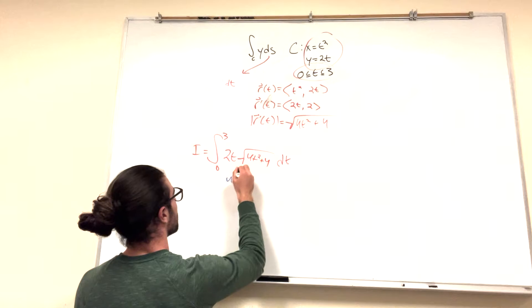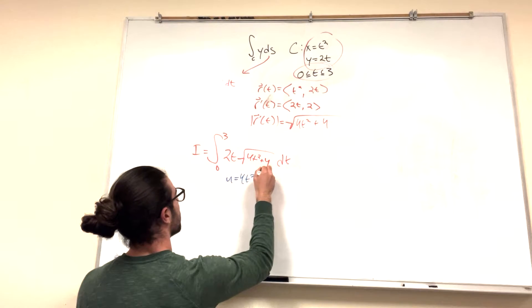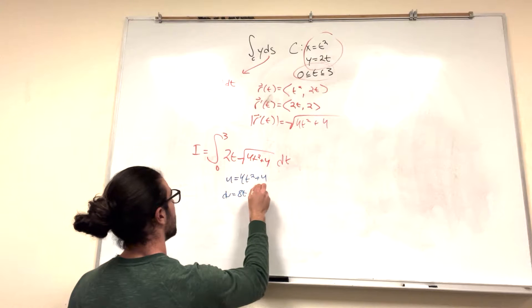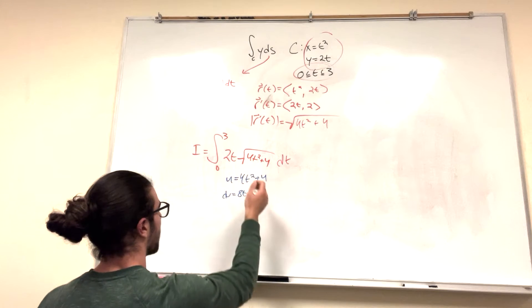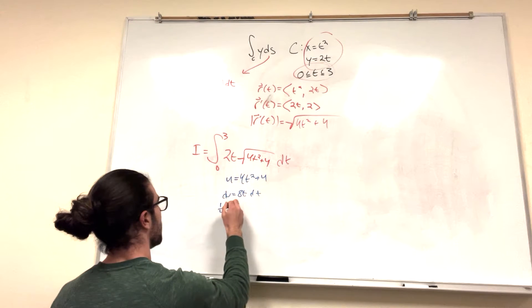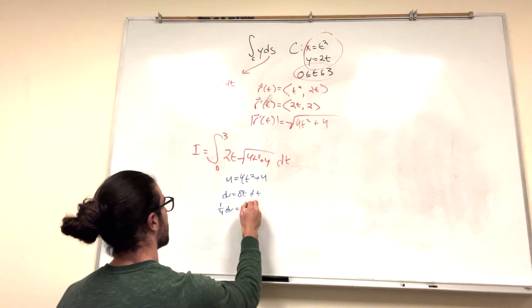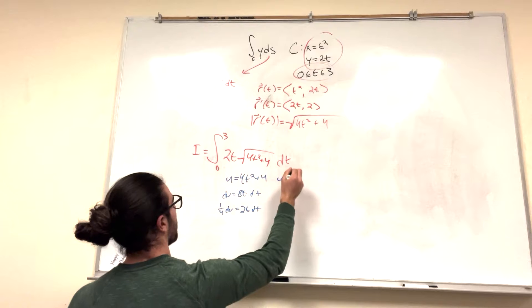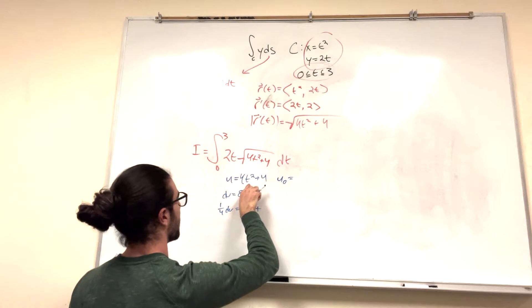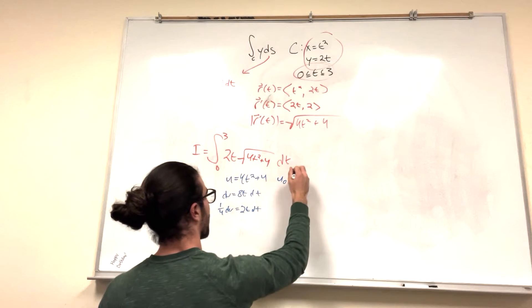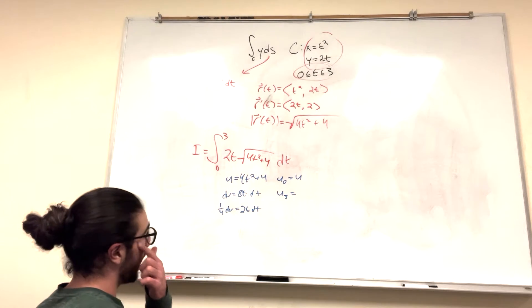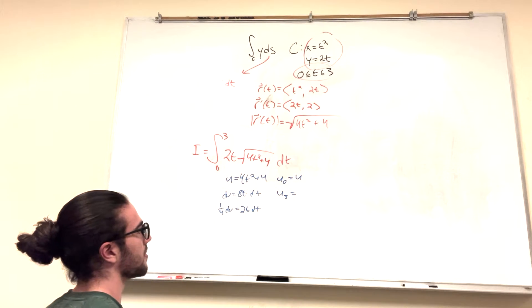So u equals 4t squared plus 4, du equals 8t dt. We have a 2t on the outside so I'm just going to say 1 over 4 du equals 2t dt. Now I'm going to reparameterize our bounds. So u of 0 equals 4. u of 3 equals 9 times 4 is 36 plus 4 so 40.